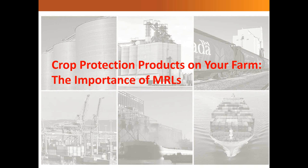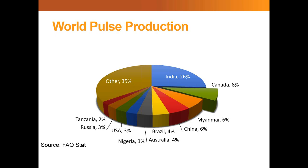As Glenda mentioned, Gord and I are going to chat a little bit about the ripple effect from the use of crop protection products on your farm — or if you're an agronomist, on your grower's farm — and the importance of MRLs to the success of our agricultural industry. We're unique in the sense that we're very heavily reliant on our export market for the success of our industry. Canada accounts for only 8% of global pulse production, with India still being the highest pulse-producing country in the world.